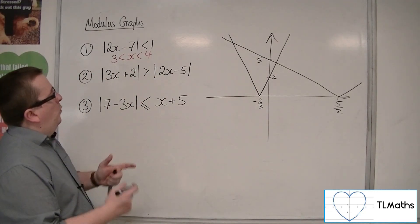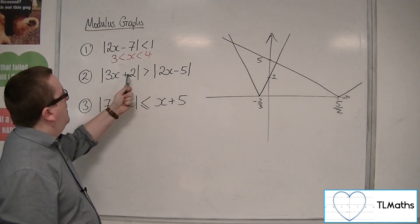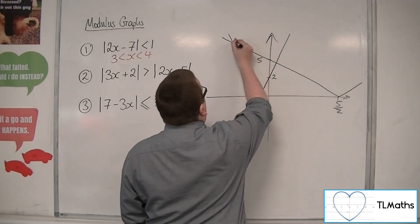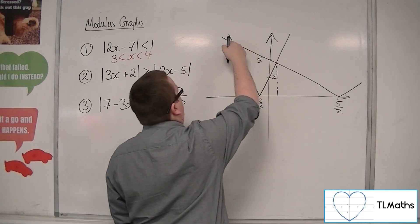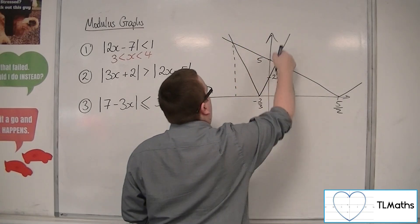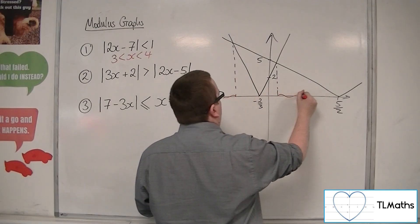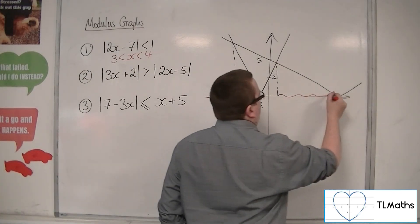So, what I'm being asked is, where is this graph above this one? So, it's above it, there, and there. So, when the x value is to the left of that point and to the right of that one. So, that just keeps going.